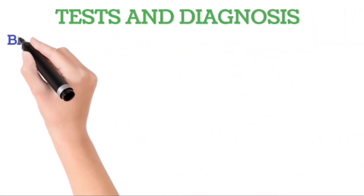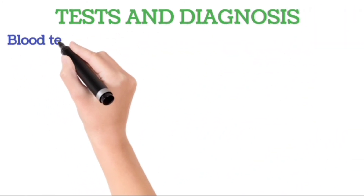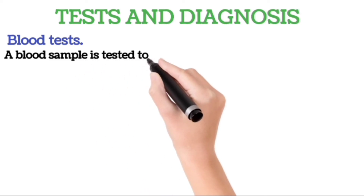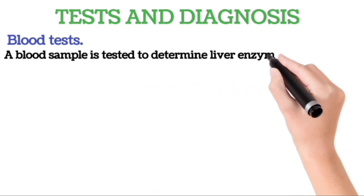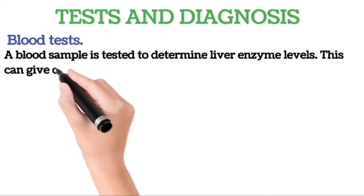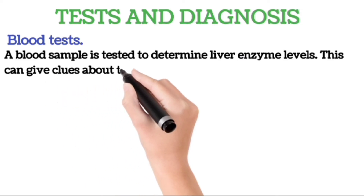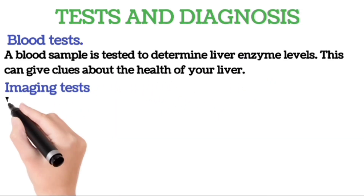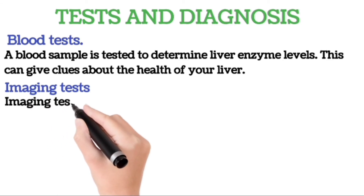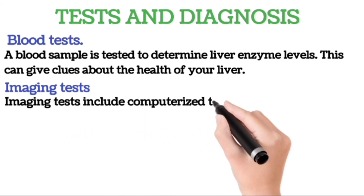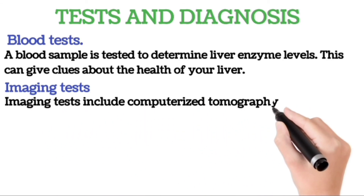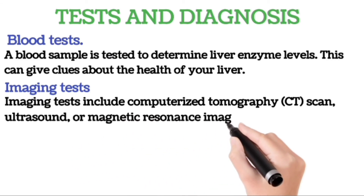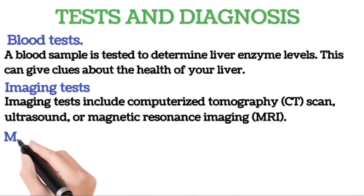Tests and diagnosis: A blood test involves taking a blood sample to determine liver enzyme levels, which can give clues about the health of your liver. Imaging tests include computerized tomography, or CT scan, ultrasound, or magnetic resonance imaging, or MRI.